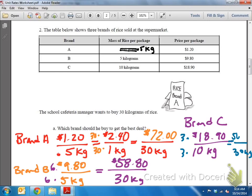And 3 times 18.90 is going to be 56.70. So look at all my prices, $72 for 30 kilograms, $58 for 30 kilograms, and $56 for 30 kilograms. Again, we're talking about the best deal and we're talking about money, which means price is important and we want the cheapest. So the cheapest one is brand C in this option.